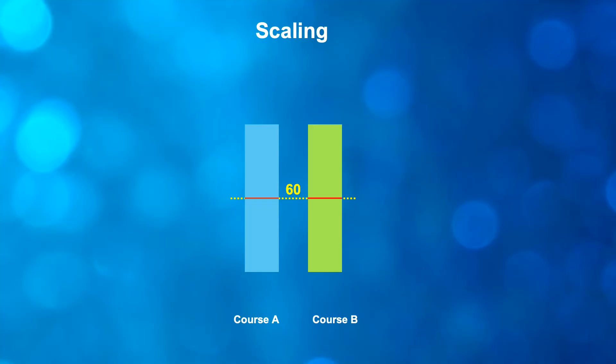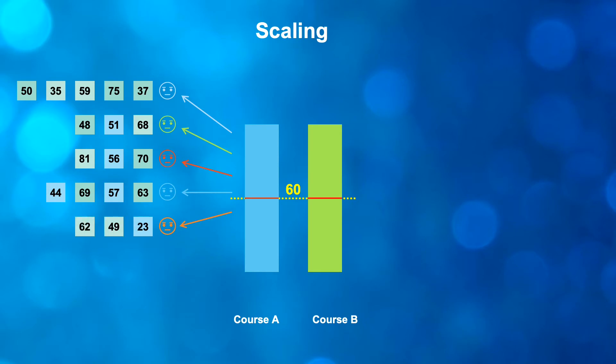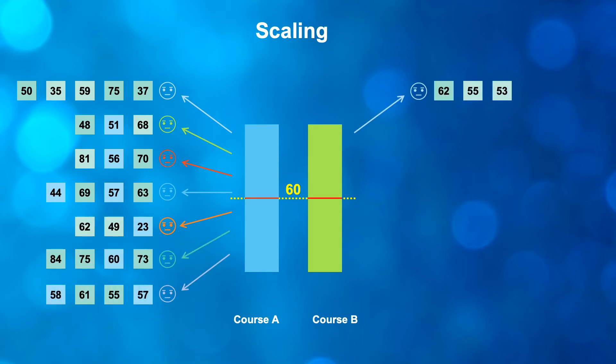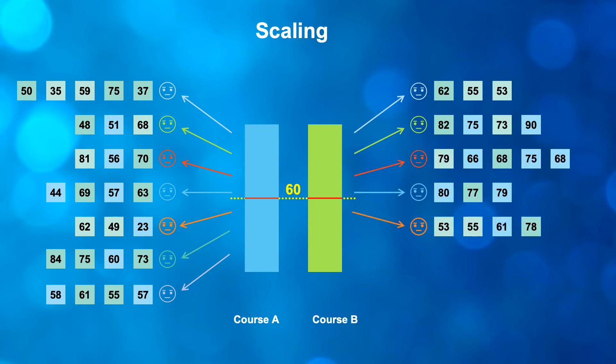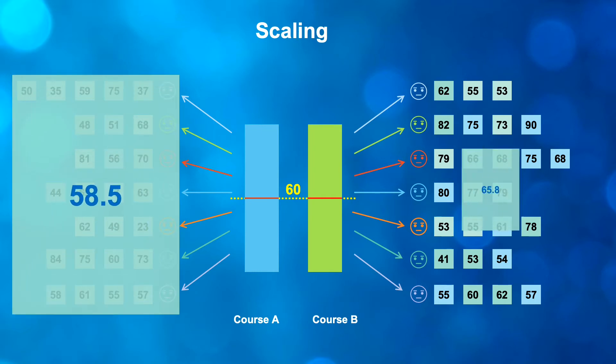So how do we work out the level of competition? Well, the process is called average marks scaling because that's exactly what happens. For every person who takes a particular subject — and in this example we've just got two subjects rather than the 50 that we do in the actual process — we look at everyone who takes Course A and ask how well do they do in their other subjects, because that's the best measure we've got of how academically capable they are. And we do the same for all the people who take Course B as well, looking at all the other subjects in all the combinations.